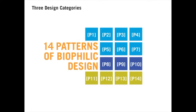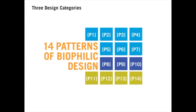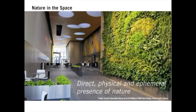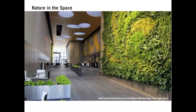Terrapin Bright Green has identified 14 patterns of biophilic design that work within these three categories. Nature in the space addresses the direct, physical, and ephemeral presence of nature in a space or place. This includes plant life, water and animals, as well as breezes, sounds, scents, and other natural elements.